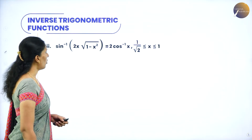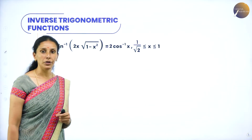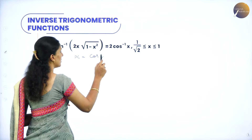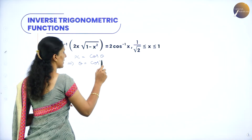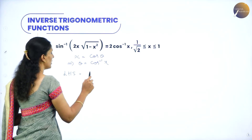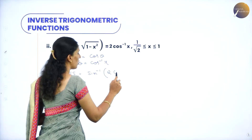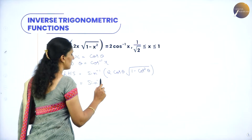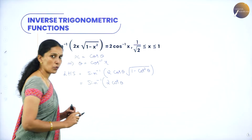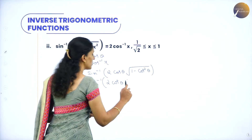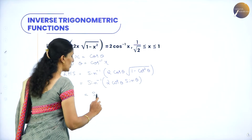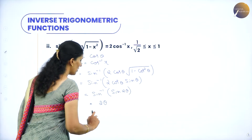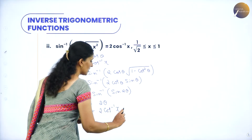Next: sin inverse of 2x√(1 - x²) is equal to 2 cos inverse x. We need the answer in the form of cos inverse x, so let x equal cos theta, which implies theta equals cos inverse x. LHS gives sin inverse of 2 cos theta √(1 - cos²theta). Since 1 minus cos square is sin square, taking the square root gives sin theta. So 2 cos theta sin theta is sin 2theta, and sin inverse of sin 2theta is 2 theta, which equals 2 cos inverse x — that is the RHS.